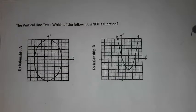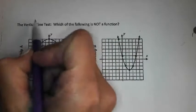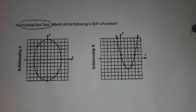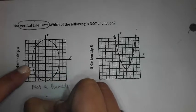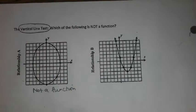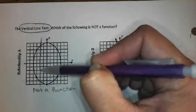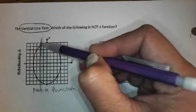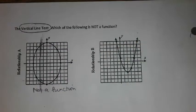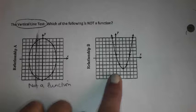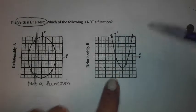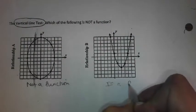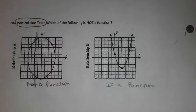Really quickly on the back, when you look at functions or not functions, do you remember the vertical line test? This one is not a function because it fails the vertical line test. When I draw a vertical line, I can find a vertical line that hits it twice. That means it's not a function. This one is a function because any vertical line I draw only hits it once.